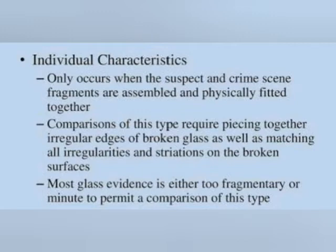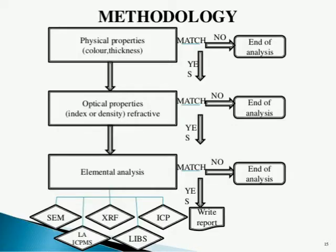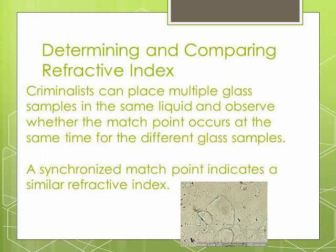Another type of fracture is cone fracture. For example, whenever a glass surface is hit by a bullet, it forms a cone fracture, which means one end is smaller and the other end is wider — the entry point is smaller while the exit point is wider. Another type is hackle fracture, where the irregular broken edges produced when glass is broken or shattered are known as hackle fracture. Another type is wavy fracture, which occurs when wavy marks are produced on glass due to high temperature or strong heat.